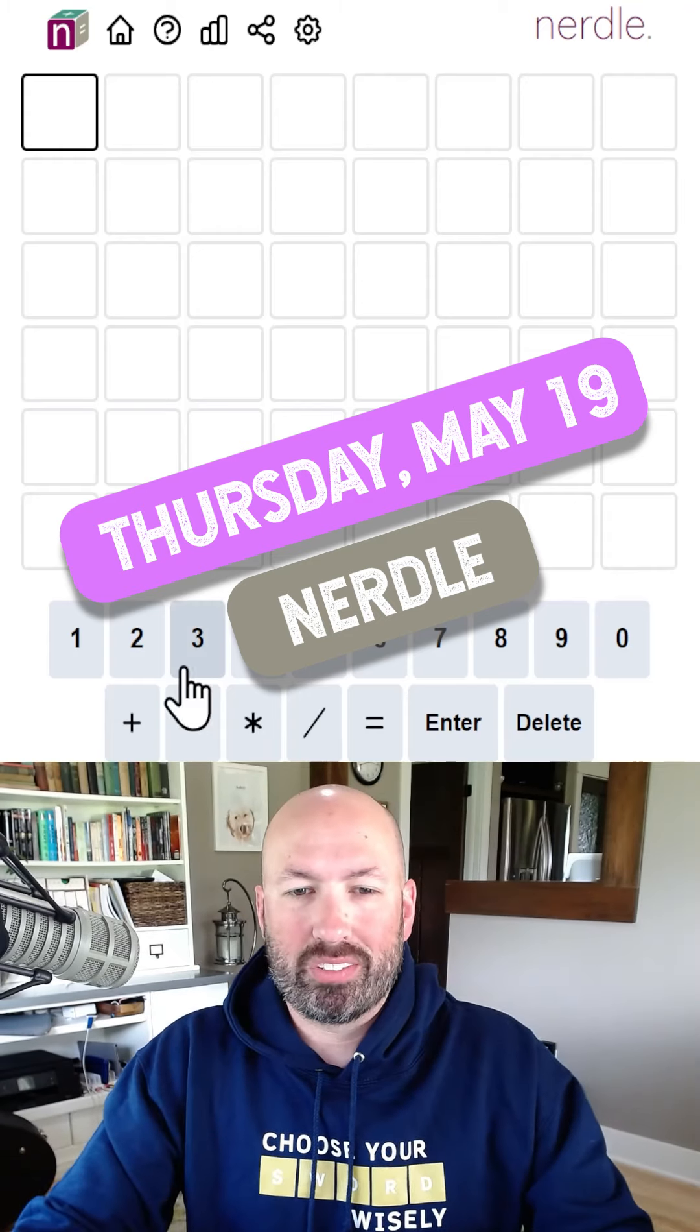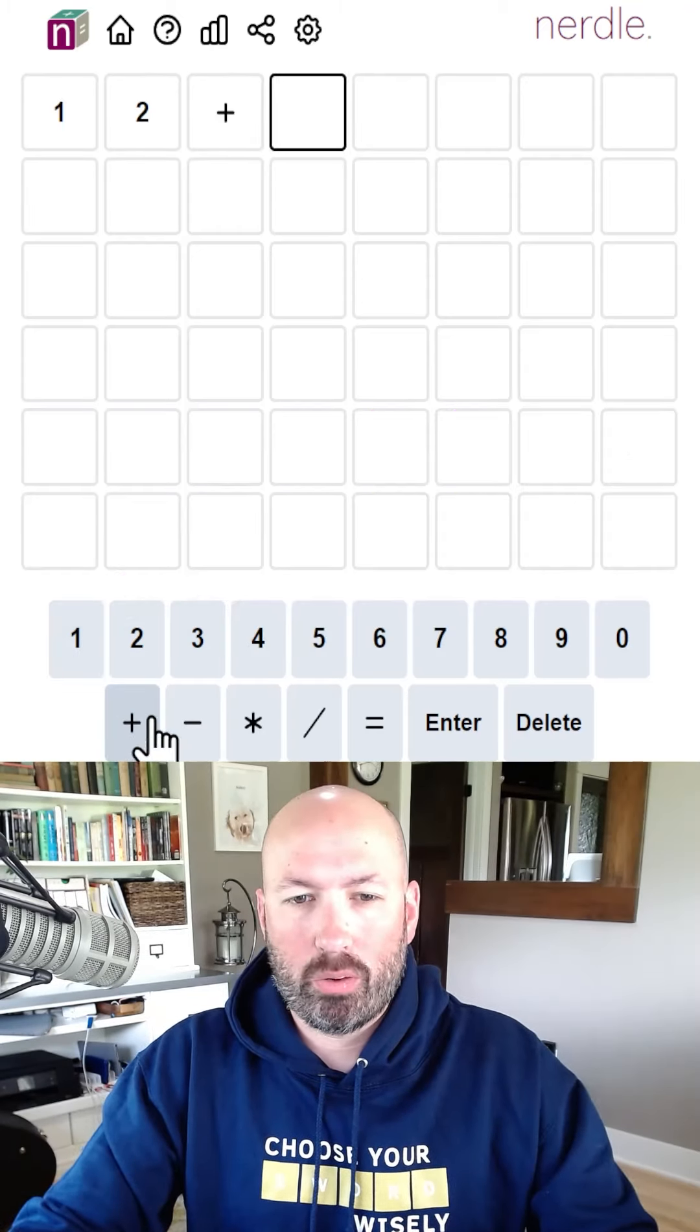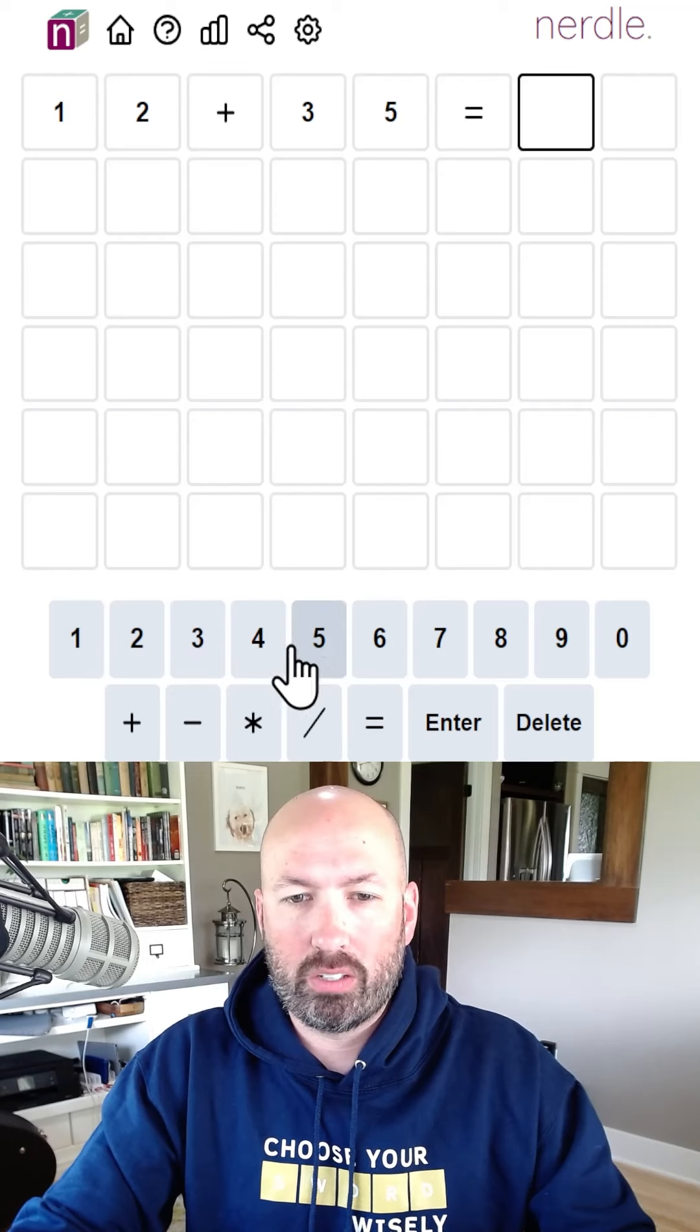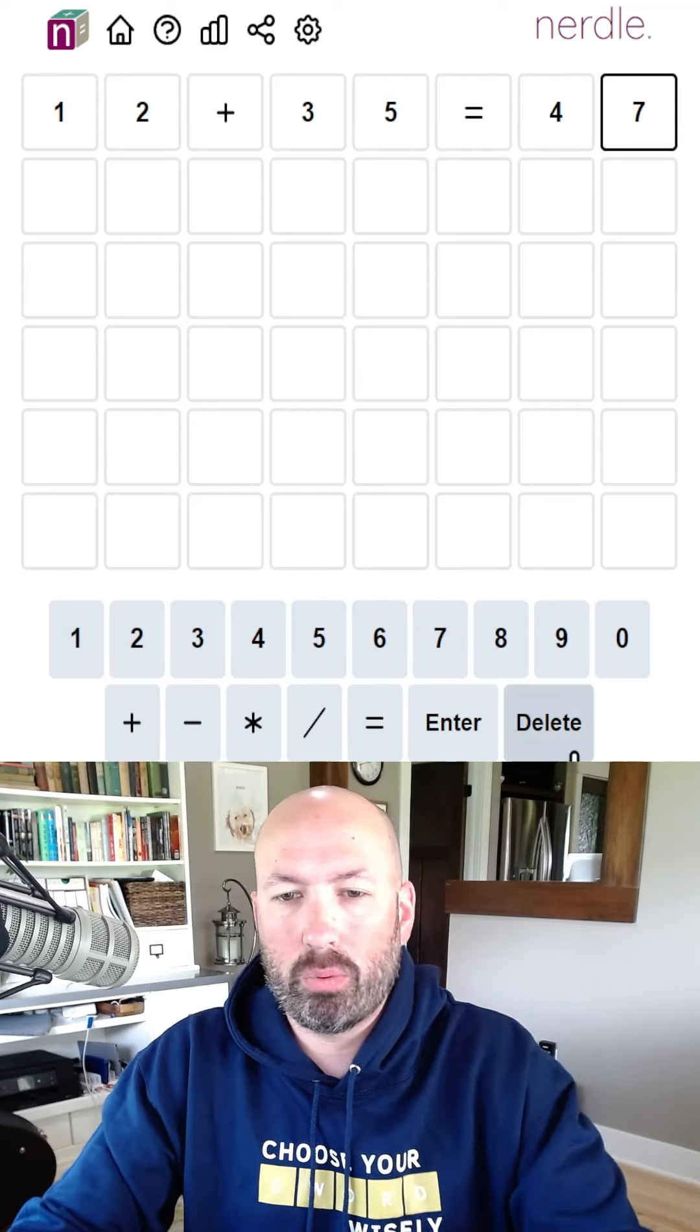All right, so I haven't done a NERDLE in a while, so I'm gonna do one of those today. So I usually start with 12 plus 35 equals 47, so let's just go with that.